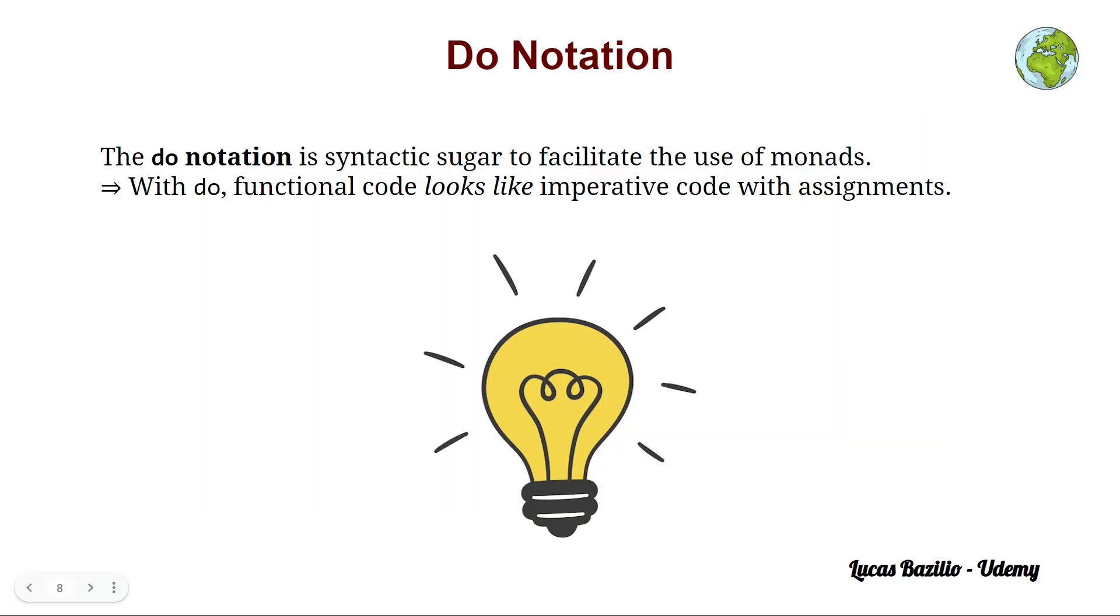So let's talk about the Do Notation. First of all, the Do Notation is what is called a syntactic sugar. In this case, to facilitate the use of monads, a syntactic sugar in a programming language means some construction which makes things easier to write without adding complexity to the language. Actually, it's a bit of magic to make things simpler, sweeter, and nicer to be used by programmers.